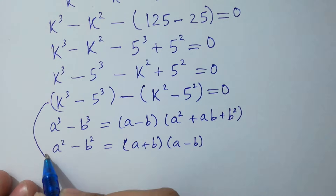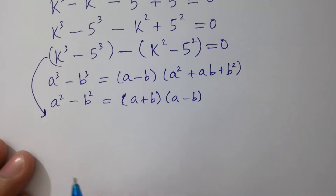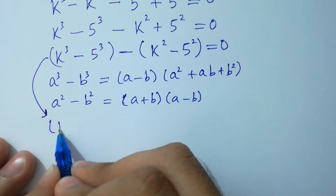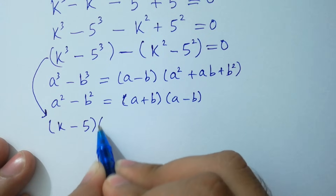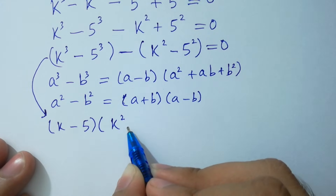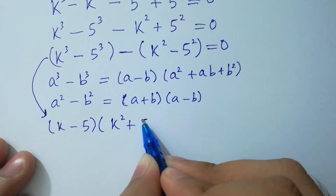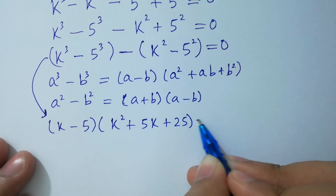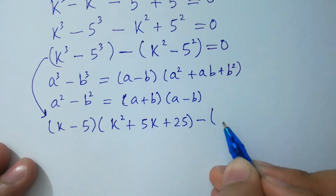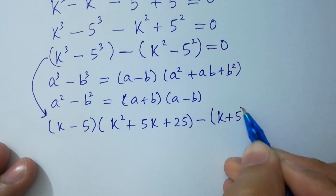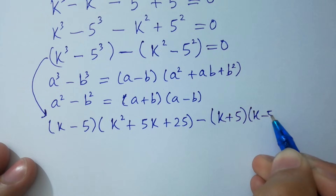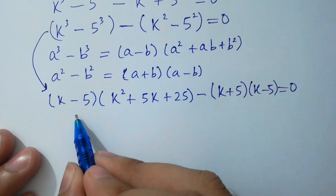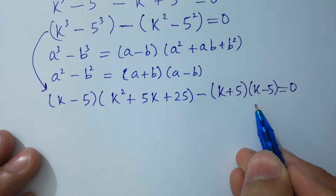This equation becomes: (k minus 5)(k squared plus 5k plus 25) minus (k minus 5)(k plus 5) equals 0. We can see that (k minus 5) appears in both terms.